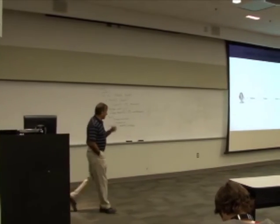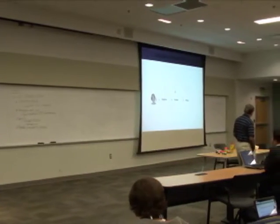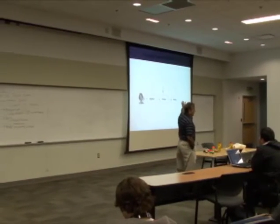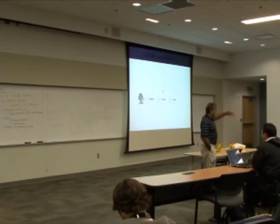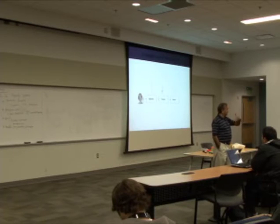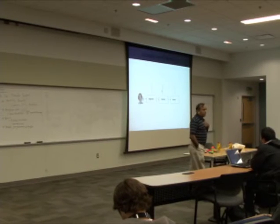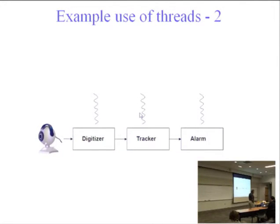Now we're going to have some fun — I'm going to give you buggy code and we're going to write a parallel version. Let me motivate that with a simple example. You've seen cameras everywhere — on highways, inside buildings — used to look for anomalous activities. If there's an analog camera, you take the image, pixelize it, convert it into pixels, then track. Say Kishore is a suspicious person — you're tracking his movement on the camera. The tracker analyzes the image to look for objects of interest, and when one appears, raises an alarm.